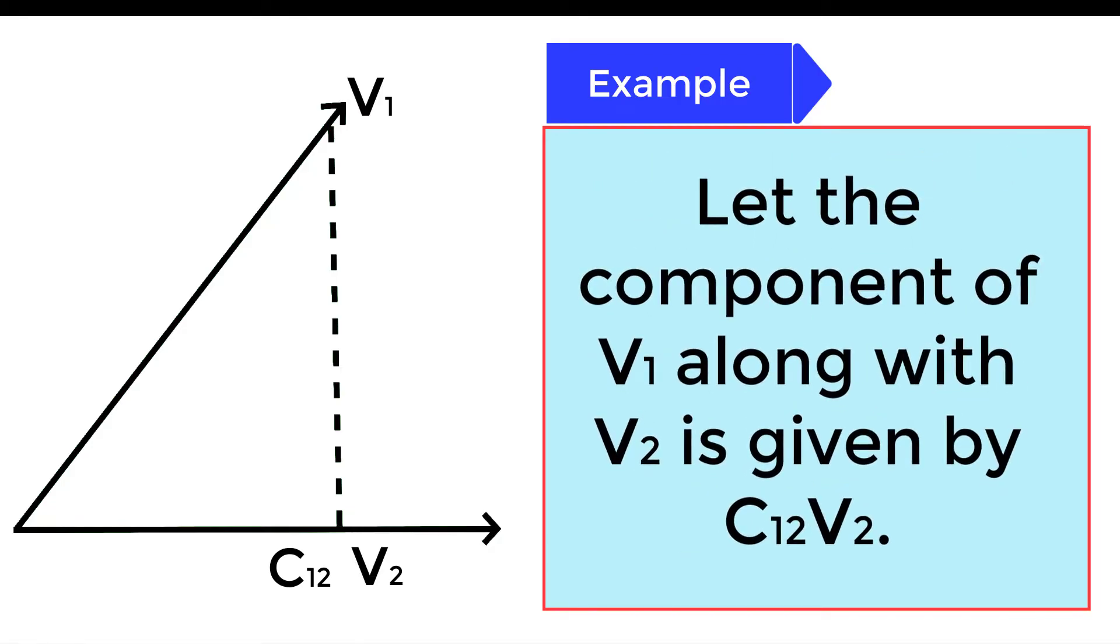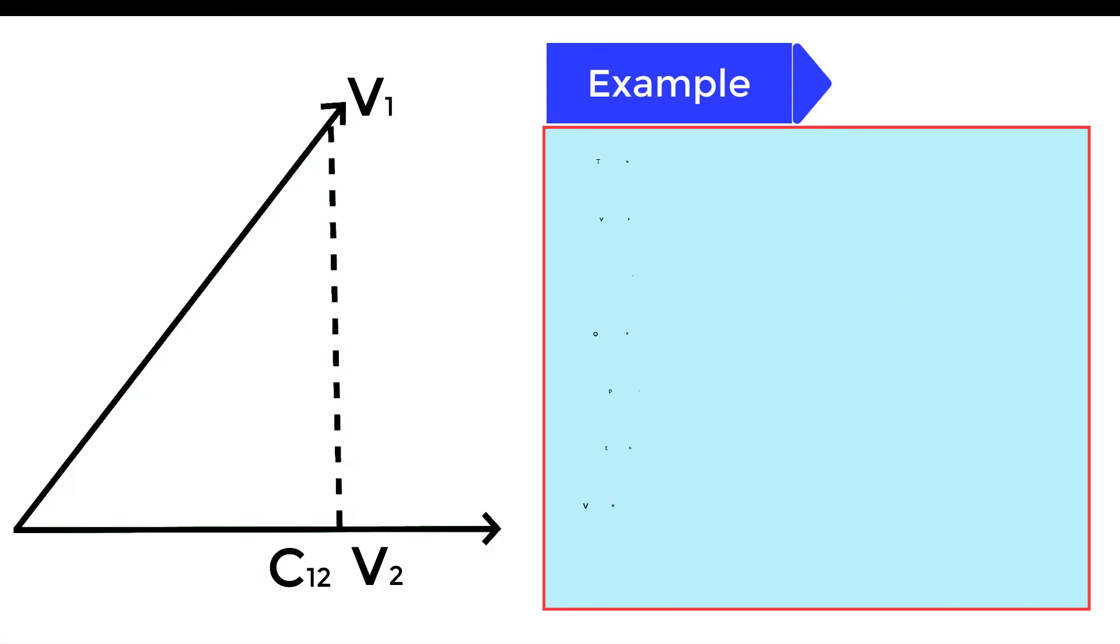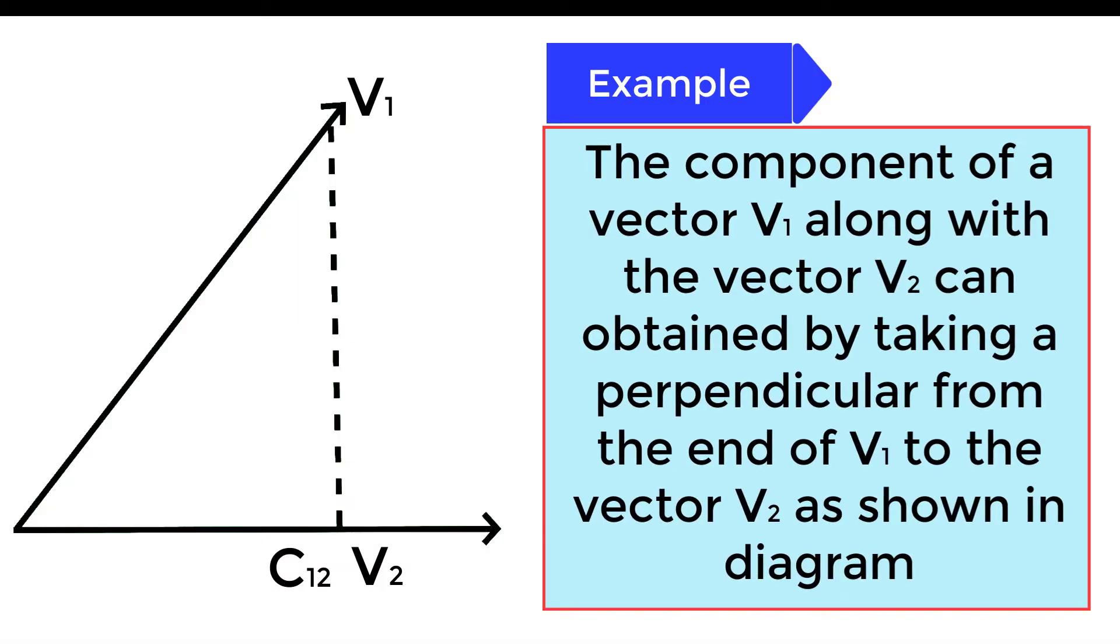Let the component of V1 along V2 be given by C12V2. The component of a vector V1 along the vector V2 can be obtained by taking a perpendicular from the end of V1 to V2 as shown in the diagram.